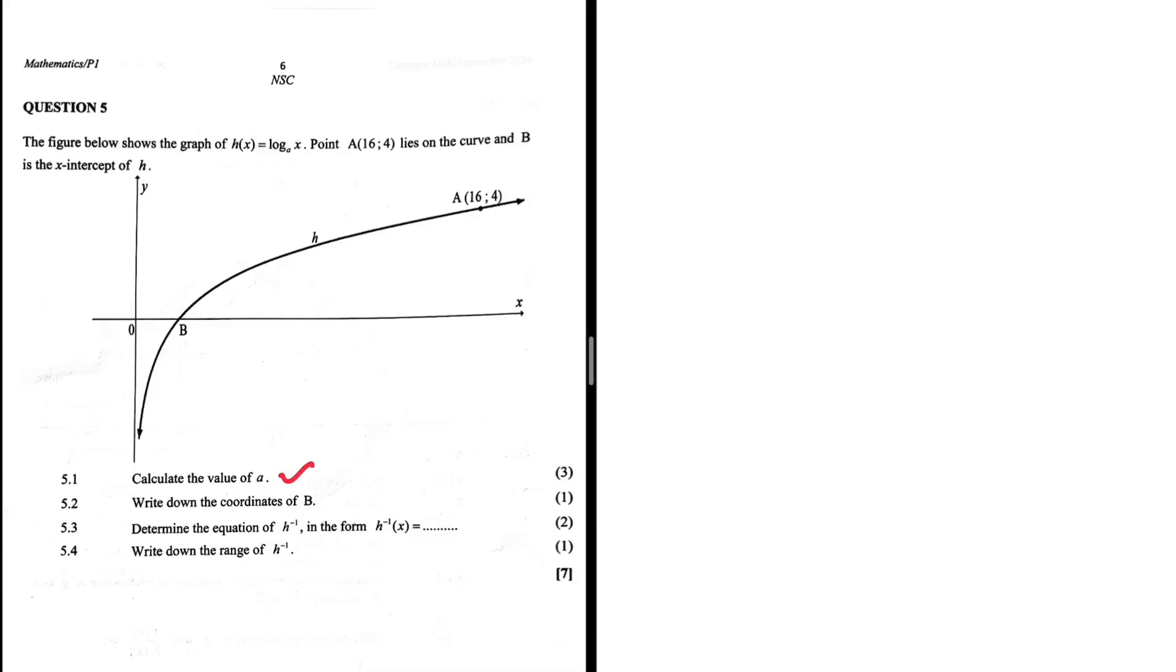The figure below shows the graph of h(x) = log_a(x). Point A lies on the curve and B is the x-intercept of h. The first question, 5.1, asks us to calculate the value of a.